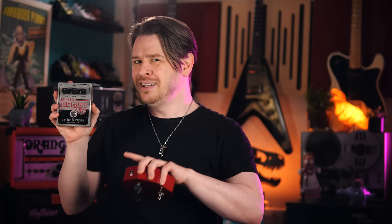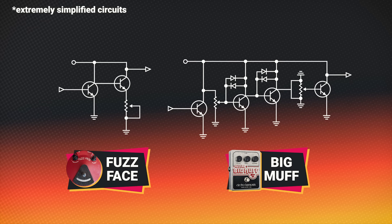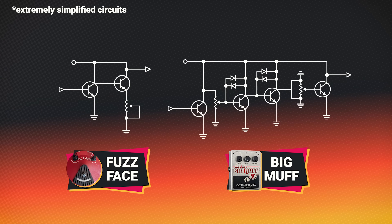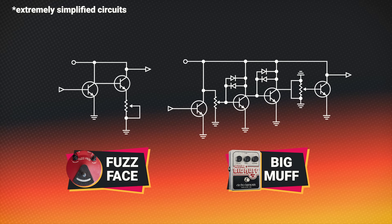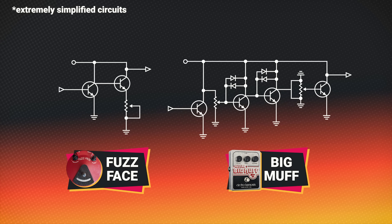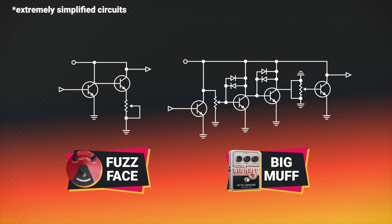I personally prefer how the fuzz face sounds and reacts to my playing, although I know a lot of people who have a hard time with it and are unable to get good sounds. Whereas the Big Muff kind of sounds the same no matter who is playing it, which is either a strength or a weakness depending on your perspective. The fuzz face is an amplify-the-signal-until-it-breaks level of simplicity, and the Big Muff is a structured and cultivated sequence of gain staging.